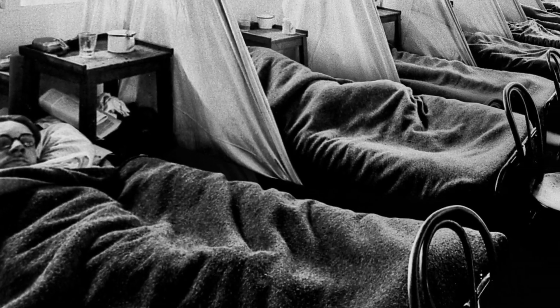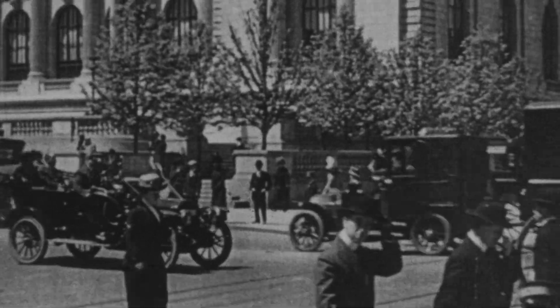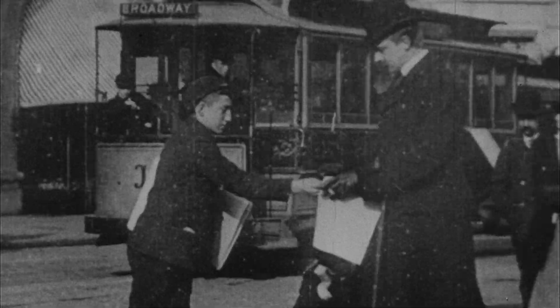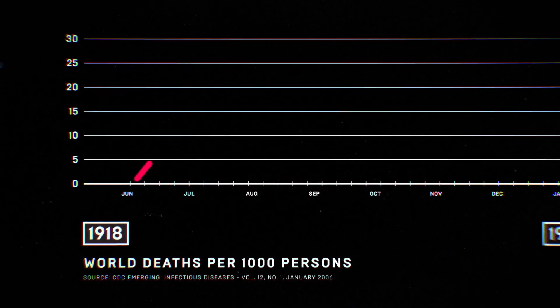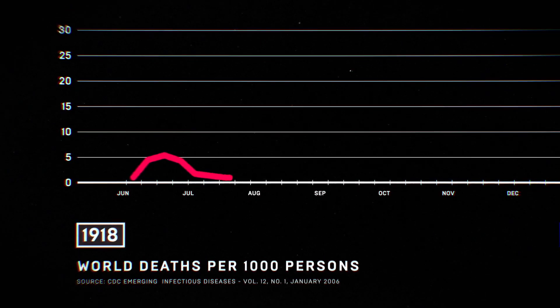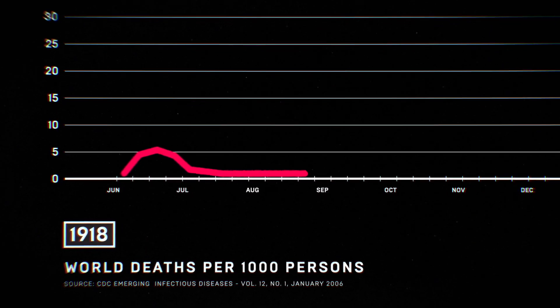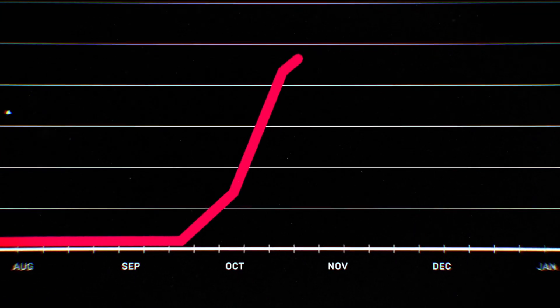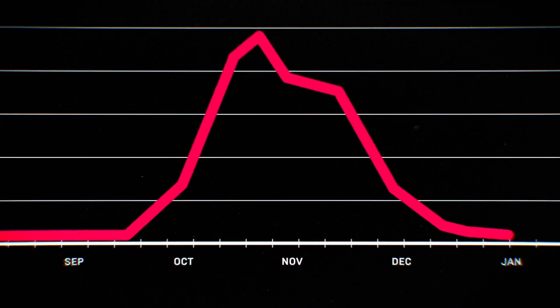In 1918, Spanish flu ravaged the globe. Like Covid-19, little was known about the disease and there was no vaccine. The pandemic began in January and began to taper off around August. Then, an even more deadly second wave struck across three devastating months in September, October and November.